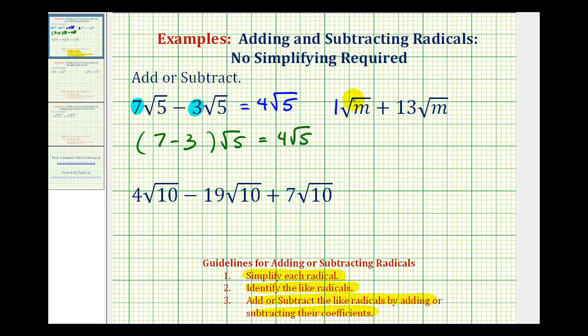So the index is the same and the radicand is the same. So these are like radicals and since 1 plus 13 is equal to 14, 1√m plus 13√m is equal to 14√m.